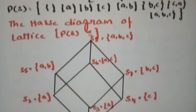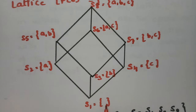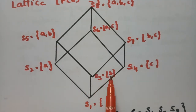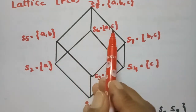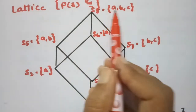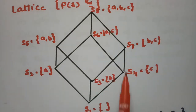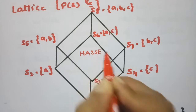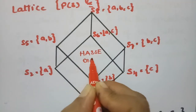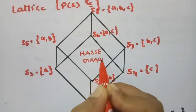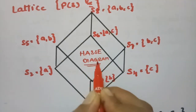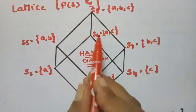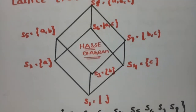The Hasse diagram is straightforward. The levels from bottom to top are: S1 (null set), then S2={A}, S3={B}, S4={C}, then S5={A,B}, S6={A,C}, S7={B,C}, and S8={A,B,C} at the top. So S1 through S8 are all plotted in the Hasse diagram.